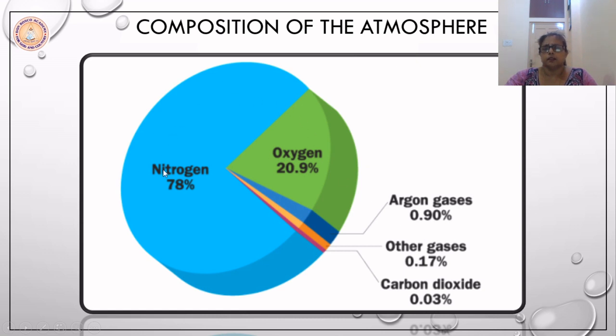The atmosphere has got 78% nitrogen, 20.9% oxygen.